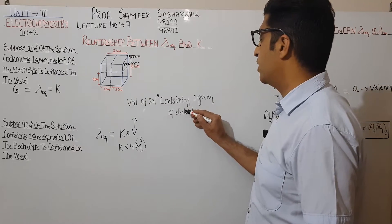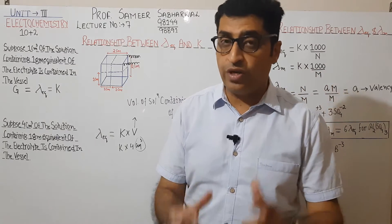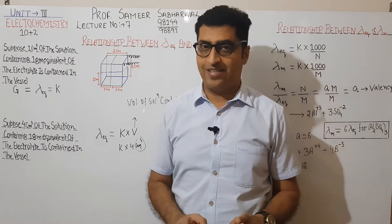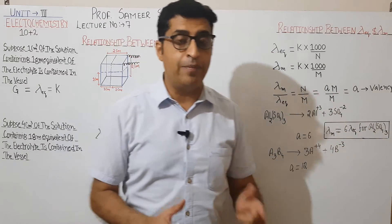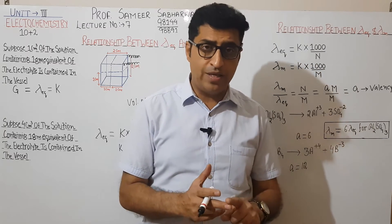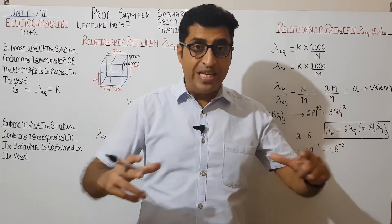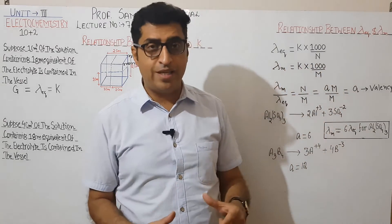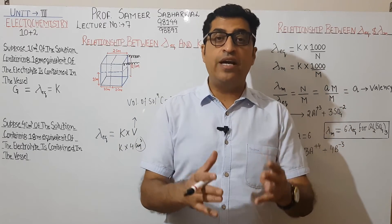V is the volume of solution containing 1 gram equivalent of electrolyte. So lambda equivalent equals K into V, where V is the volume containing 1 gram equivalent of electrolyte. In lambda equivalent, we take 1 gram equivalent of electrolyte dissolved in V centimeter cube of solution, when the distance between electrodes is 1 centimeter and the area is so large that the whole solution is contained between them.